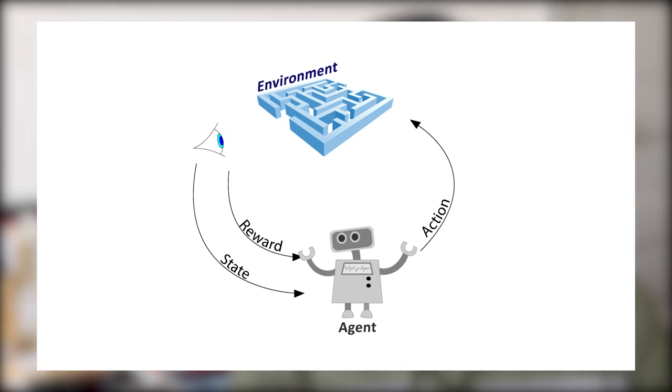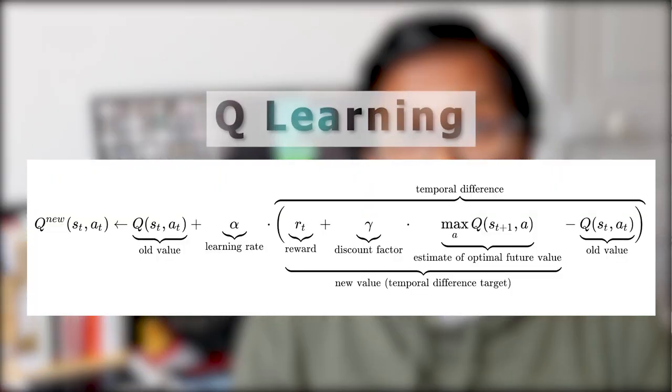In this video we are going to talk about such a reinforcement learning algorithm called Q-learning. Using Q-learning, a reinforcement learning agent tries to figure out the quality of its action based on the rewards it receives, so that it can decide which actions to perform in sequence to get maximum reward in the long term.